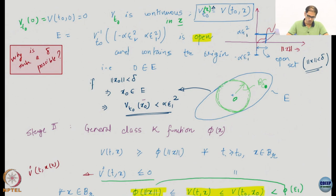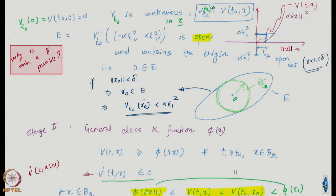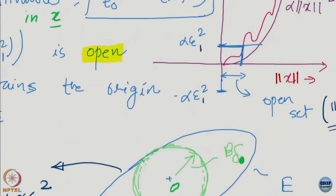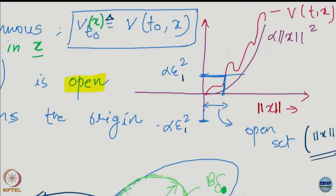Let us look at this picture. You know how this function works — v does not have to be an increasing function or anything. It just has to dominate this class-K function alpha times norm(x) squared in this case. On the x-axis there is norm(x) and on the y-axis there is the value of v. Now what do I want? I want v to lie within this range, and I want to see what range that gives me on norm(x).